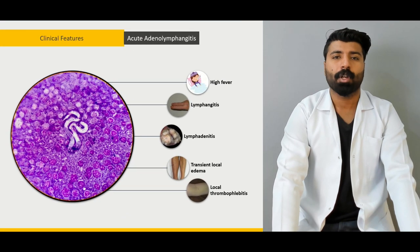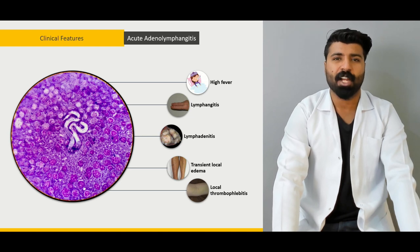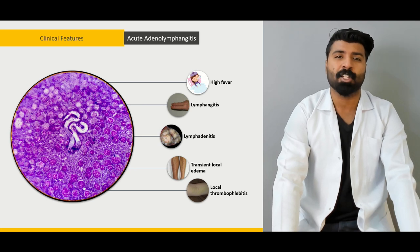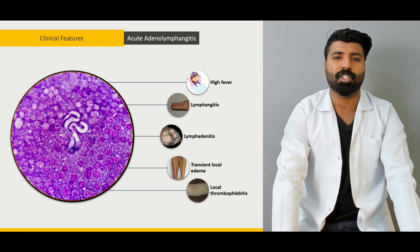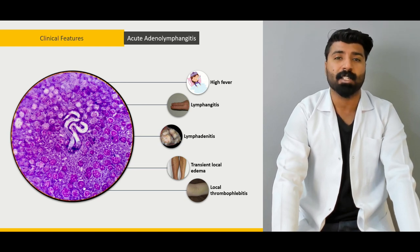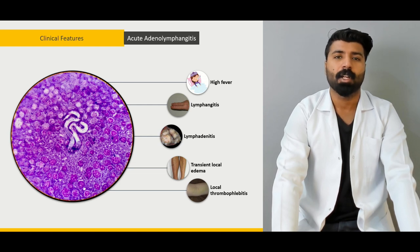Next, we're going to talk about the clinical features of acute adenolymphangitis. Before that, we'll discuss what clinical features the patient will present with — the acute features. In those acute features, we have acute adenolymphangitis, which has its own symptoms. We're going to talk in detail about what acute adenolymphangitis is, how it manifests, how long it stays, and how it will be treated.